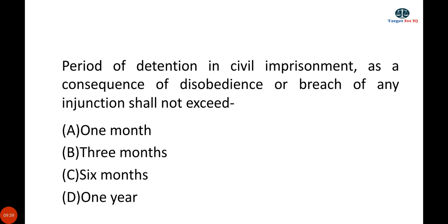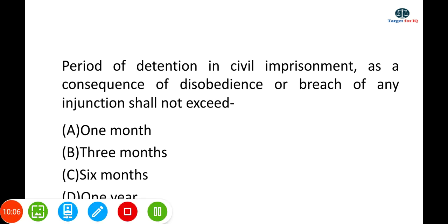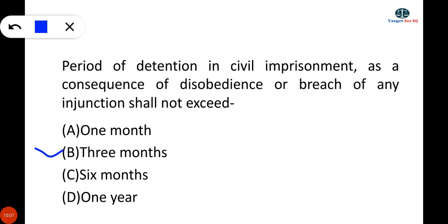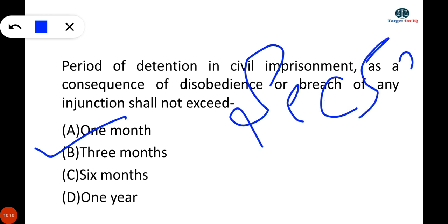Our last question is: the period of detention in civil imprisonment as a consequence of disobedience or breach of any injunction shall not exceed? The correct answer is Option B — 3 months. This is provided under Section 58 of CPC, which prescribes 3 months as the maximum period of detention.